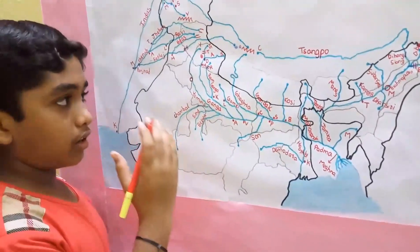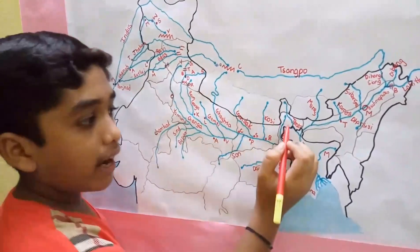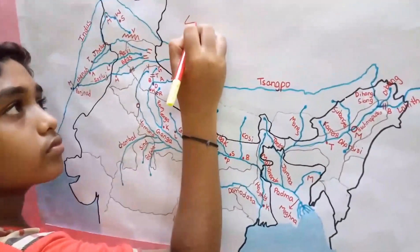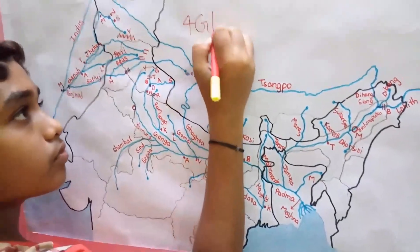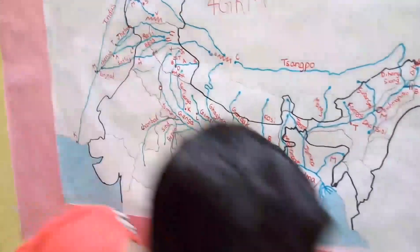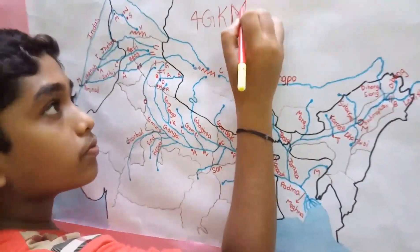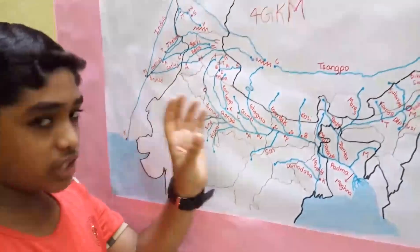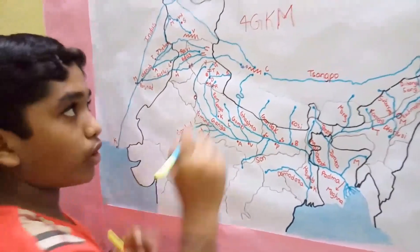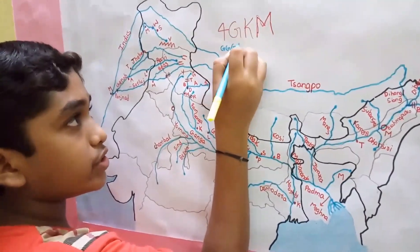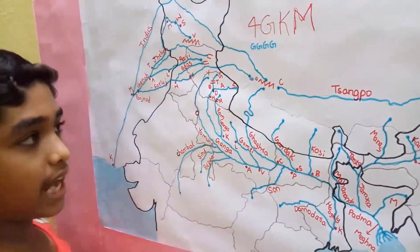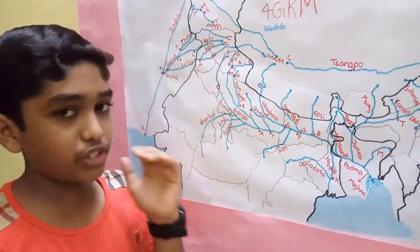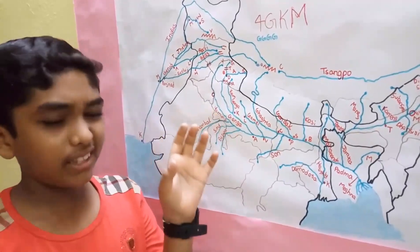Do you know the distance between the Ram Ganga and the Mahananda? It is 4G kilometers. So let me explain — 4G kilometers means G, G, G, G. The first G stands for Ram Ganga. So though it starts with the letter R, we stress at G — Ram Ganga — and we treat it as G.